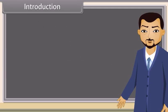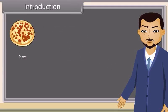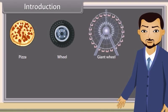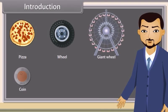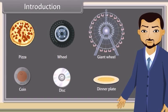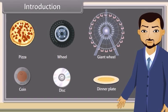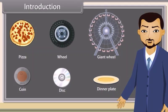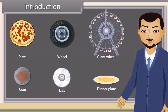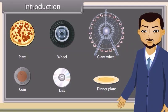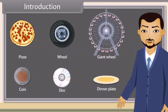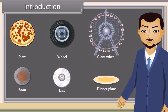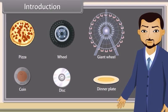Look at these things: Pizza, Wheel, Giant Wheel, Coin, Disc, Dinner Plate. All these are examples of a circle. Today we will study about circles and the properties of circles. Come, let's start.